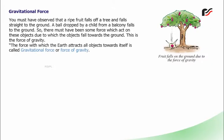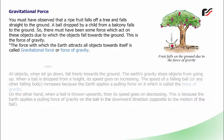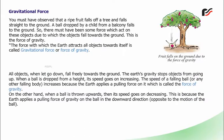Gravitational force: A ripe fruit falls off a tree and falls straight to the ground. A ball dropped by a child from a balcony falls to the ground. There must be some force acting on these objects due to which they fall towards the ground. This is the force of gravity. The force with which the earth attracts all objects towards itself is called gravitational force or force of gravity. All objects, when let go, fall freely towards the ground. The earth's gravity stops objects from going up. When a ball is dropped from a height, its speed increases, because the earth applies a pulling force on it called the force of gravity.